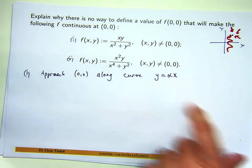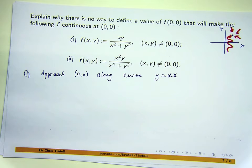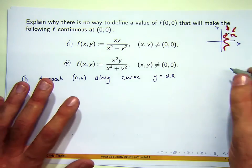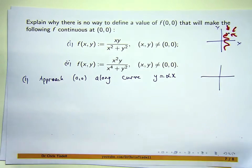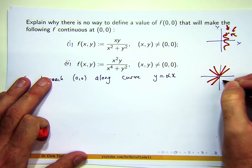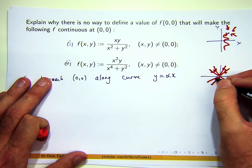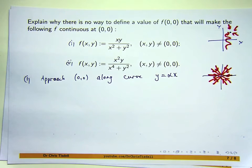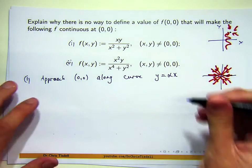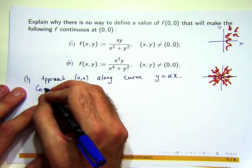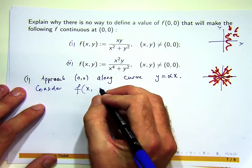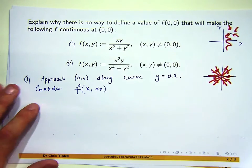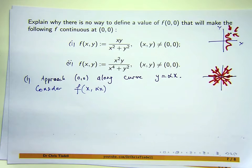Here alpha is any constant you like. So if alpha is 2, you'd be approaching along the line y = 2x. If alpha is negative 1, you'd be approaching the origin along y = −x. So you're approaching along these lines. Let's consider f along the line y = αx — basically replacing y with αx.